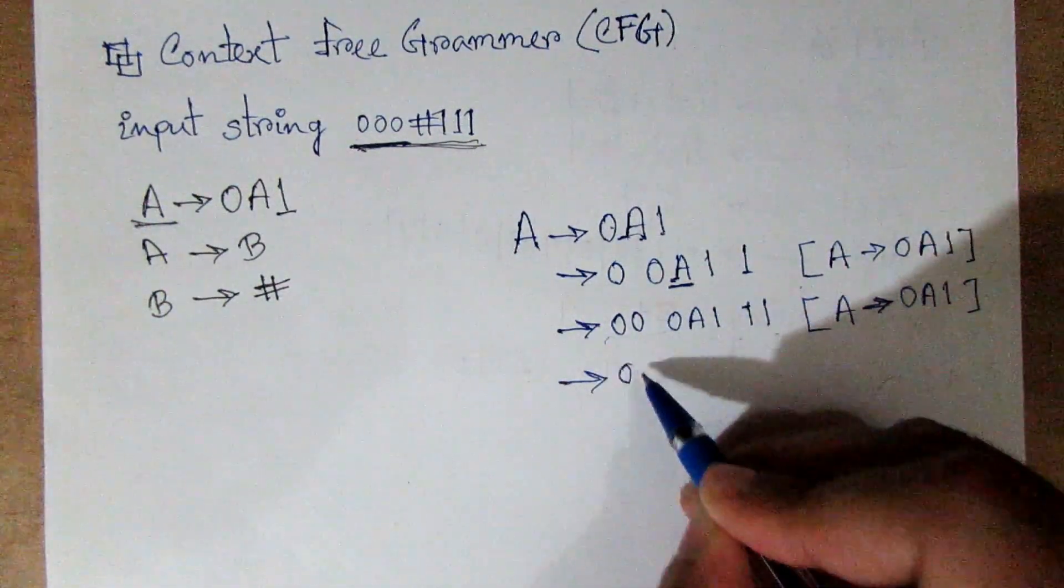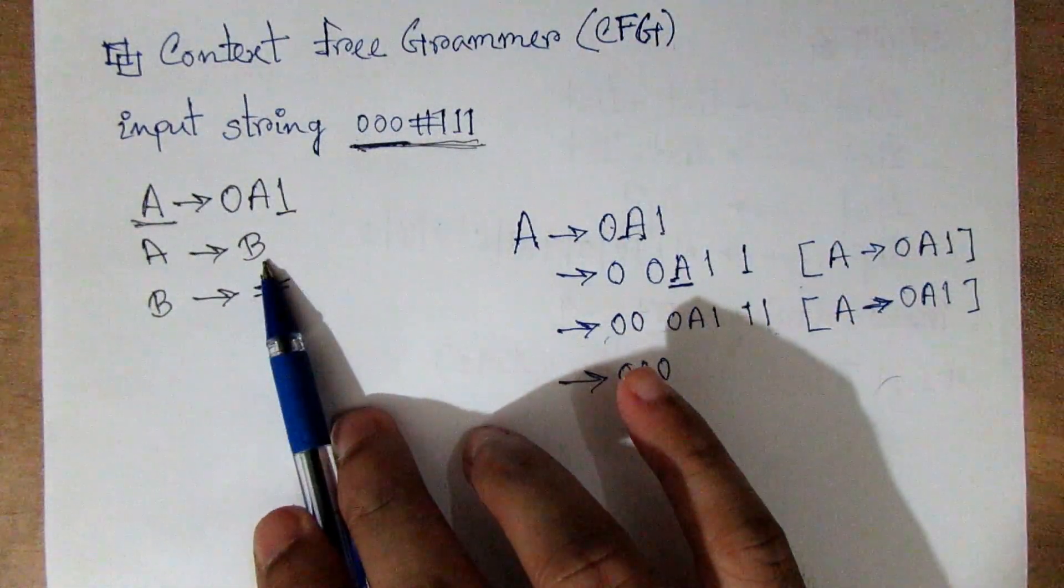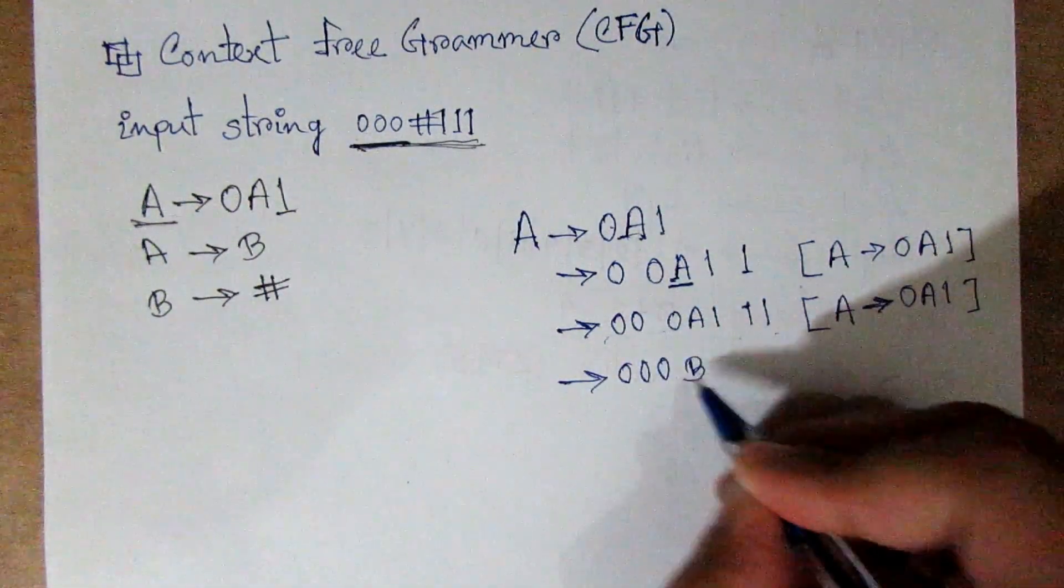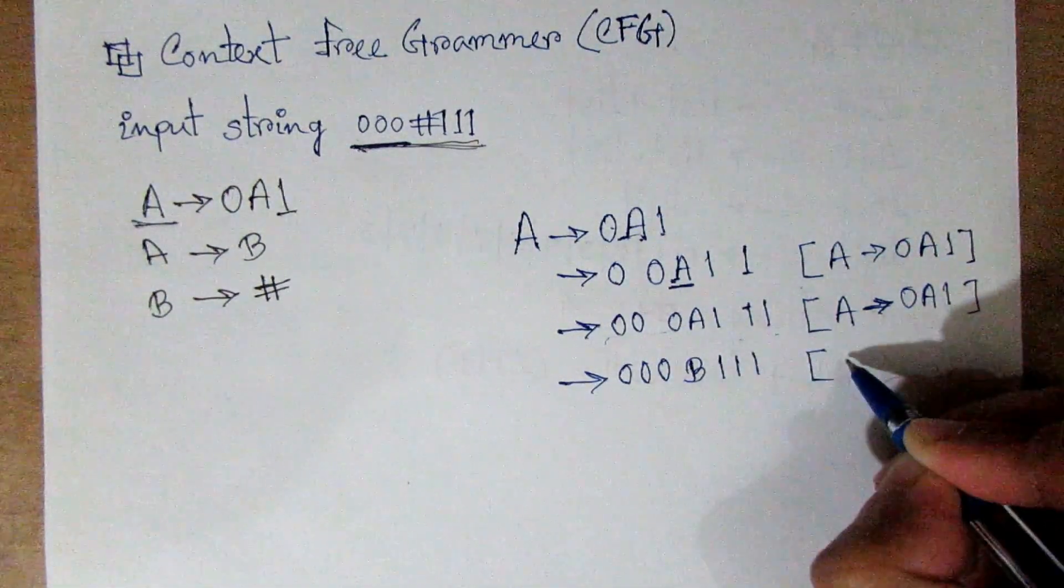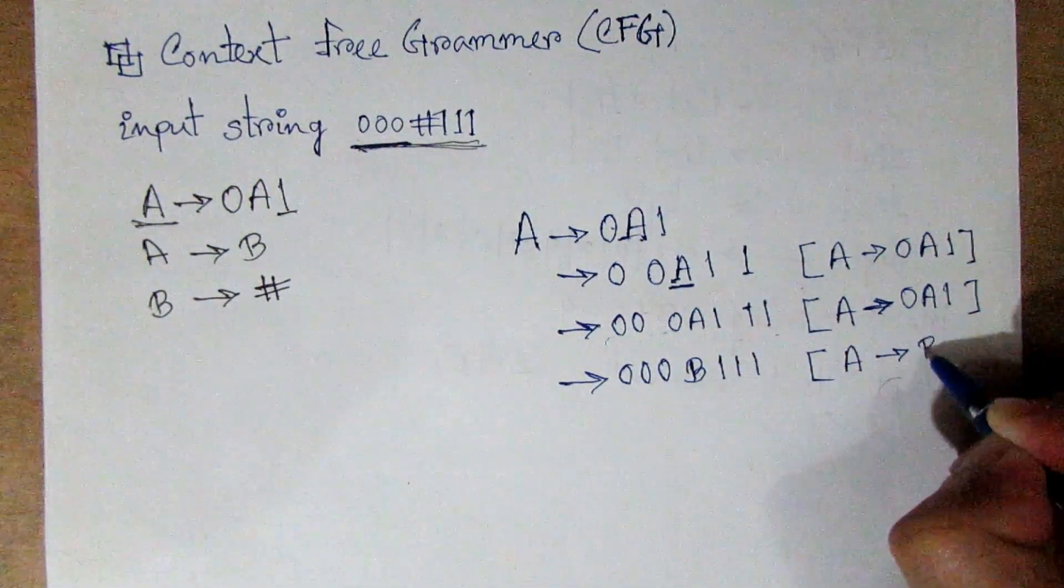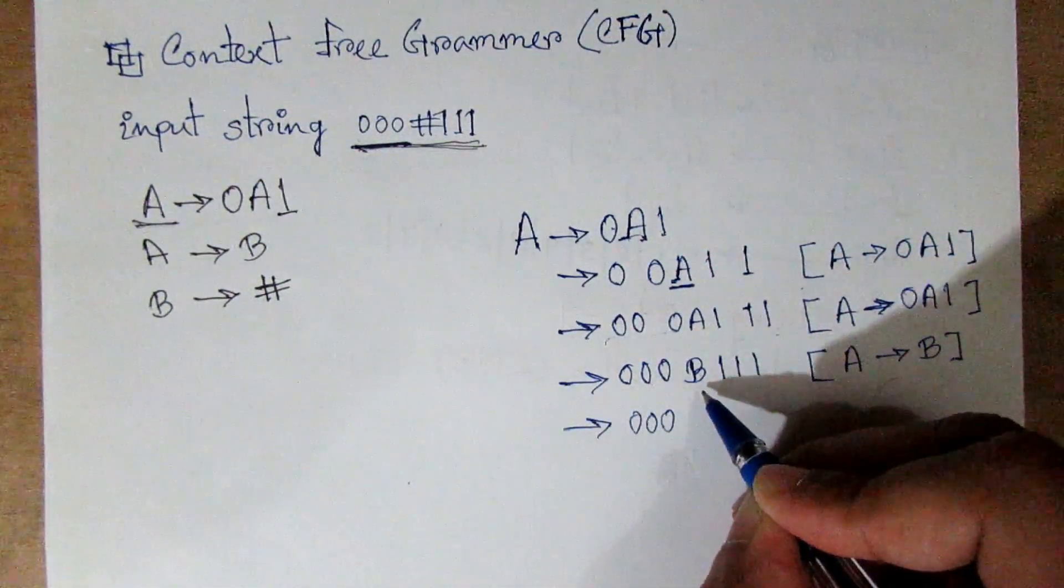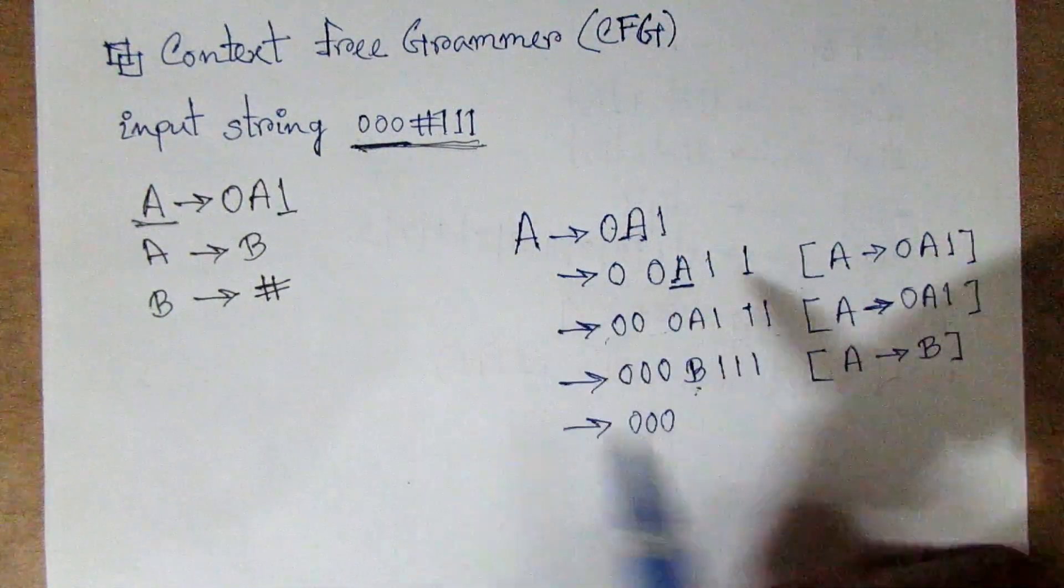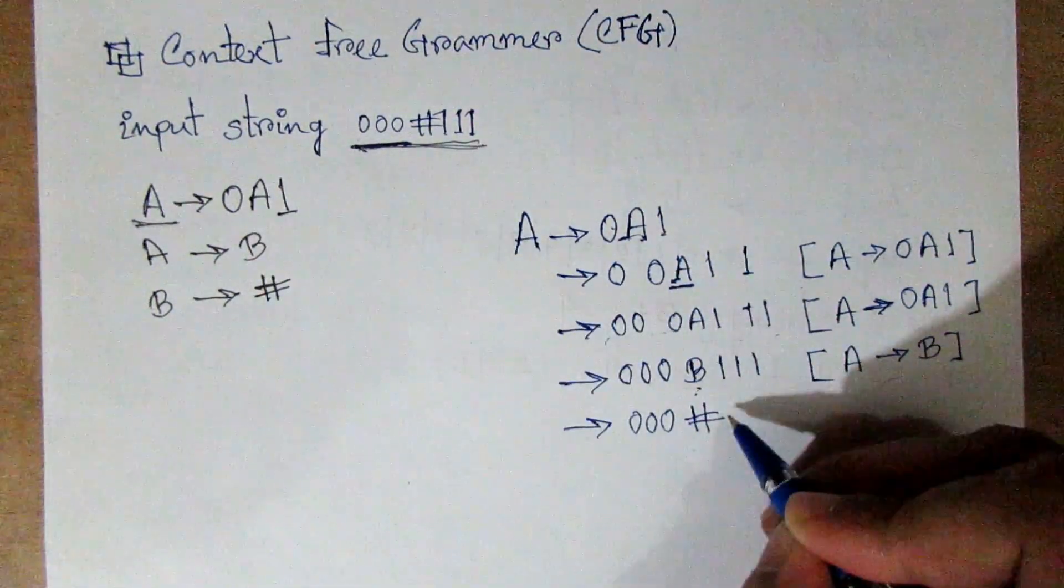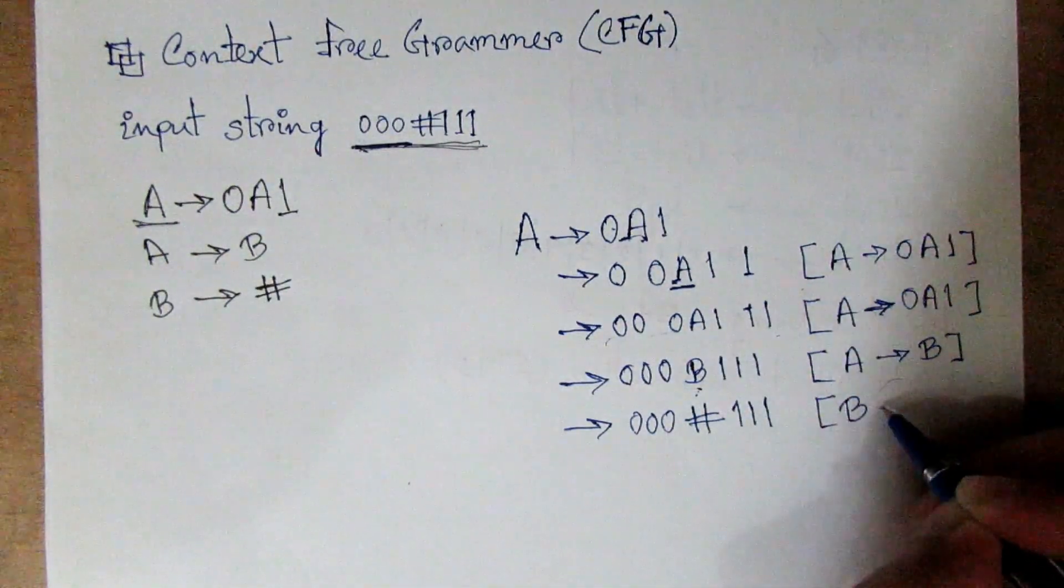We are going to add 0, then we have to add B. So we are going to add B, then add 1. Add 0, 0, 0. If we add B, then we will add hash. Add hash, add 1, 1, 1. Then we are going to add the output.